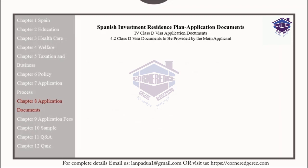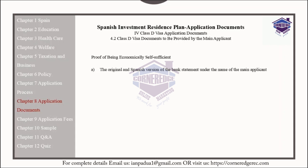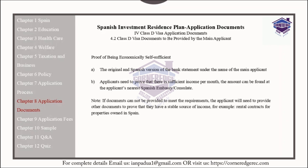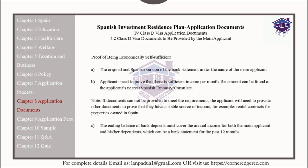The main applicant should provide the following documents for their Class D Visa application. As proof of being economically self-sufficient, they must provide the original and Spanish versions of the bank statement under the name of the main applicant. Applicants need to prove that there is sufficient income per month; the required amount can be found at the applicant's nearest Spanish embassy or consulate. If documents cannot be provided to meet the requirements, the applicant will need to provide other documents to prove a stable source of income — for example, rental contracts for properties in Spain. The ending balance of bank deposits must cover the annual income for both the main applicant and their dependents, which can be demonstrated via a bank statement for the past 12 months.